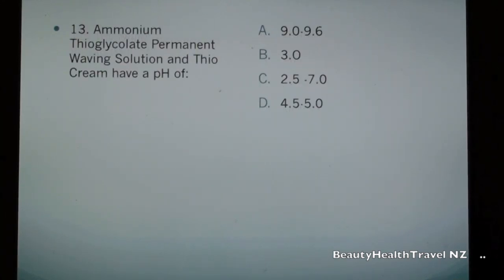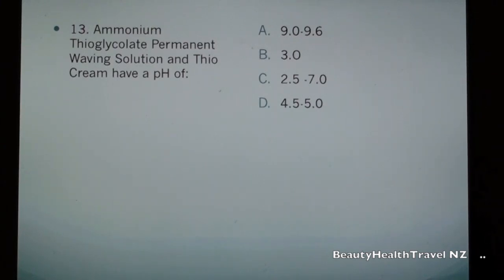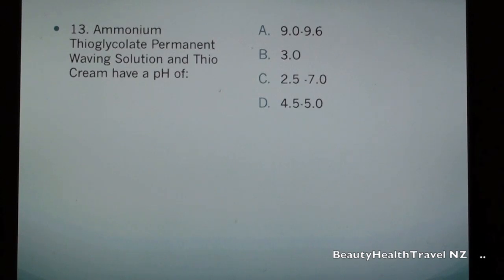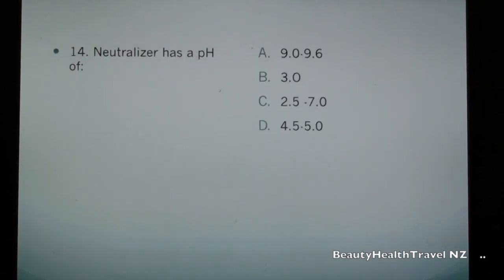Question 13: Ammonium thioglycolate permanent waving lotion and thio cream have a pH of: a) 9.0 to 9.6, b) 3.0, c) 2.5 to 7.0, d) 4.5 to 5.0.